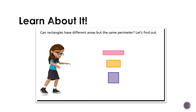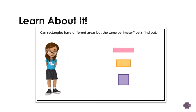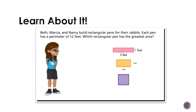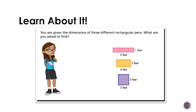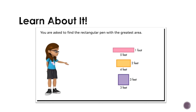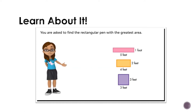Can rectangles have different areas but the same perimeter? Let's find out. Beth, Marcia, and Nancy build rectangular pens for their rabbits. Each pen has a perimeter of 12 feet. Which rectangular pen has the greatest area? You are given the dimensions of three different rectangular pens, and you are asked to find the rectangular pen with the greatest area. Drawings help you see how the rectangles are similar and different.